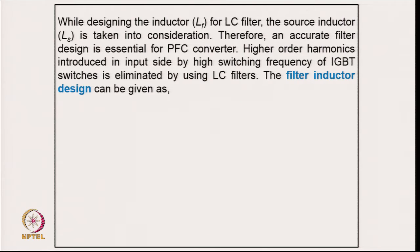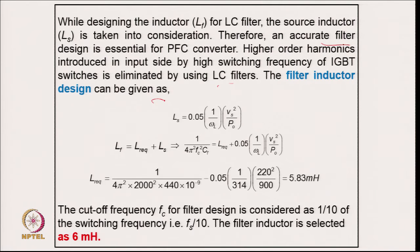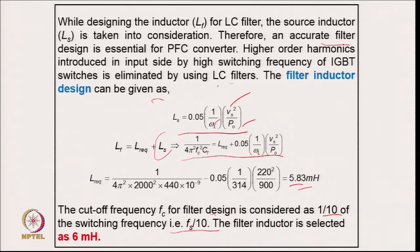While designing the inductor for this LC EMI filter, the source inductor is taken into consideration, as an accurate filter design is essential for the PFC converter to eliminate higher-order harmonics induced by the switching frequency. The filter inductor is calculated from the RMS voltage divided by power relation. The total inductance comes to 5.5 mH; after accounting for source inductance it is 5.83 mH. The cutoff frequency is set at one-tenth of the switching frequency, giving a filter inductor of approximately 6 mH. This completes the EMI filter design and all component designs for the buck-boost PFC converter in CCM.